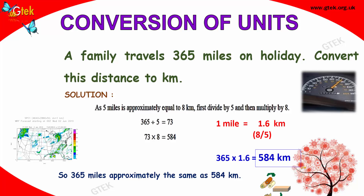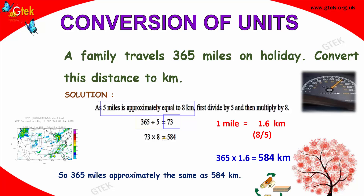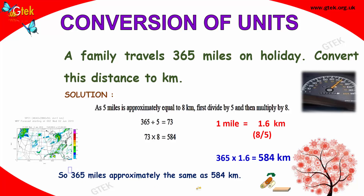This is one way. The other way is: 5 miles is approximately equal to 8 kilometers. So I need to divide 365 by 5 — you get 73 — and then multiply by 8, you get 584. So the answer is 584. Therefore, 365 miles is approximately the same as 584 kilometers.